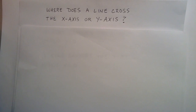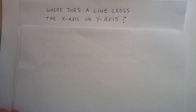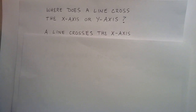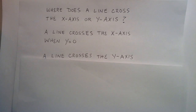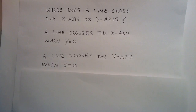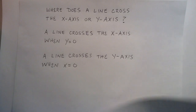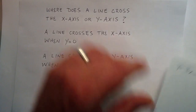Hey everybody, this is Paul. Today I'm going to be showing you where a line crosses the x or y axis. A line crosses the x axis when y equals 0, and a line crosses the y axis when x equals 0. Let me go ahead and show you an example of this.